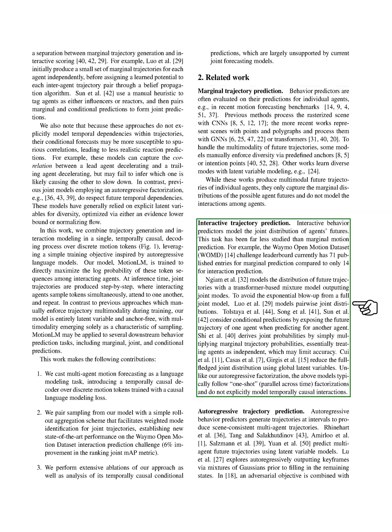Interactive behavior predictors model the joint distribution of agents' futures. This task has been far less studied than marginal motion prediction. For example, the Waymo Open Motion Dataset Challenge Leaderboard currently has 71 published entries for marginal prediction compared to only 14 for interaction prediction. Some models output joint modes using a transformer-based mixture model. To avoid the exponential blow-up from a full joint model, some models consider pairwise joint distributions. Other models derive joint probabilities by simply multiplying marginal trajectory probabilities, essentially treating agents as independent, which may limit accuracy.